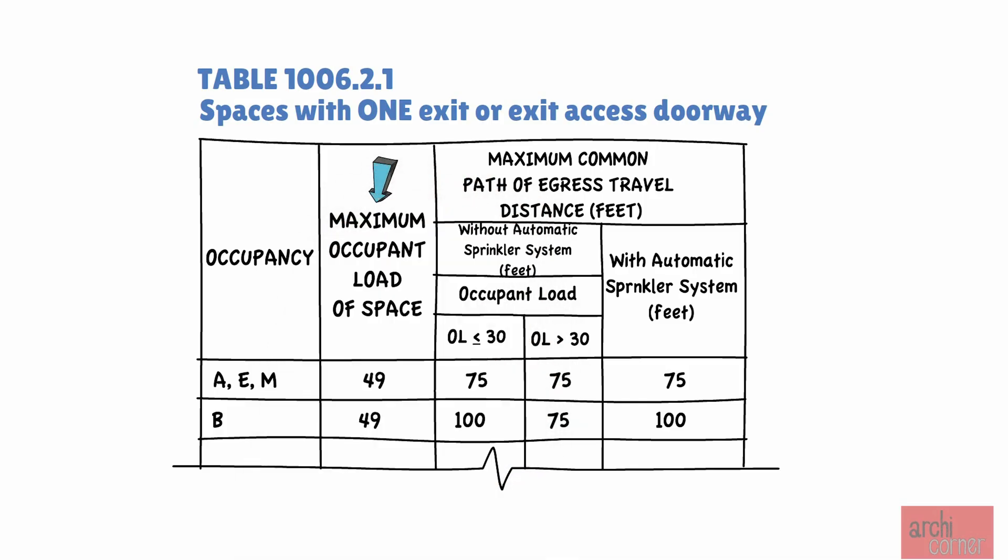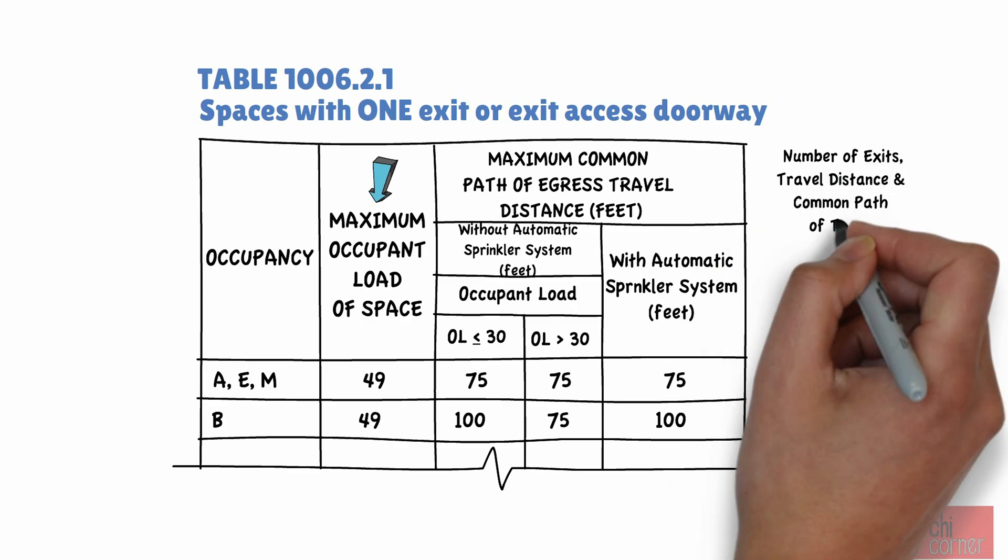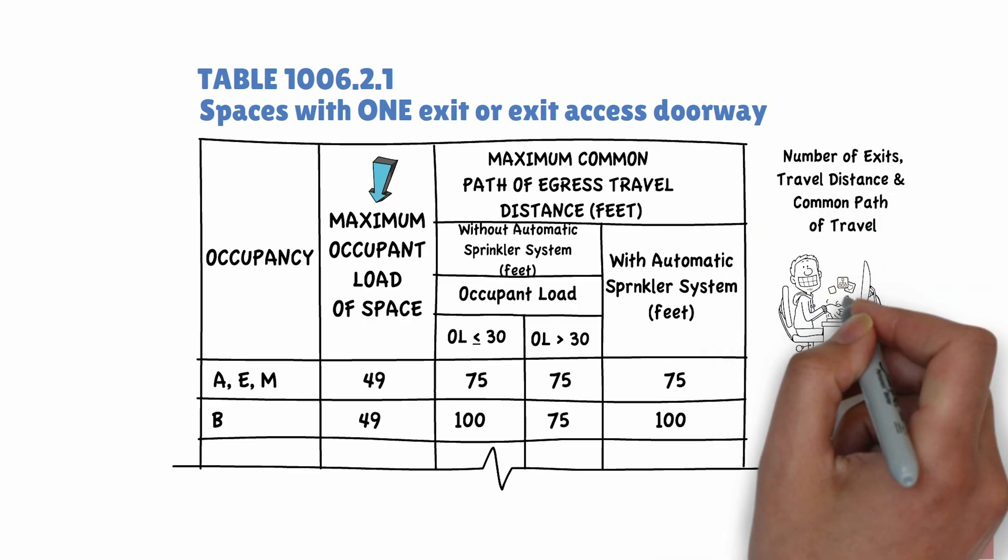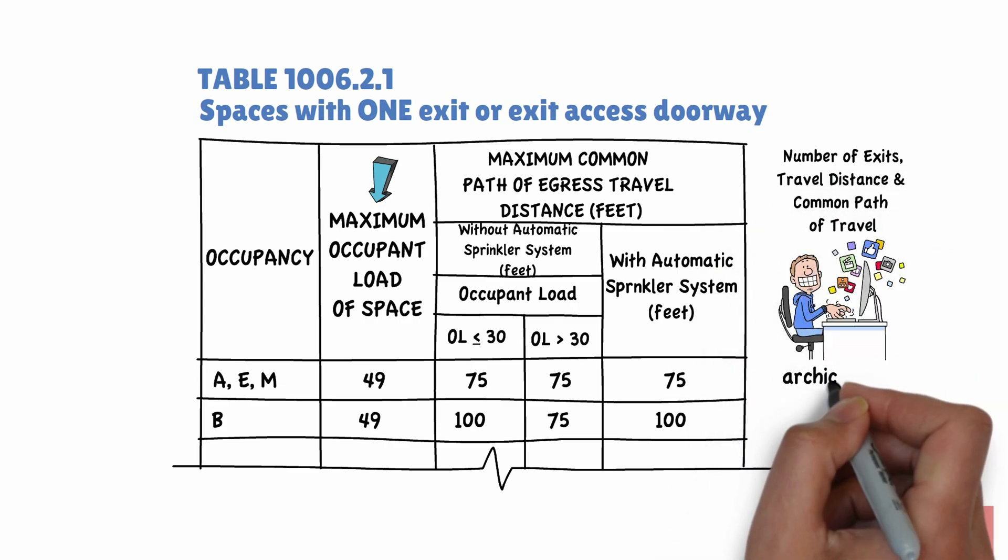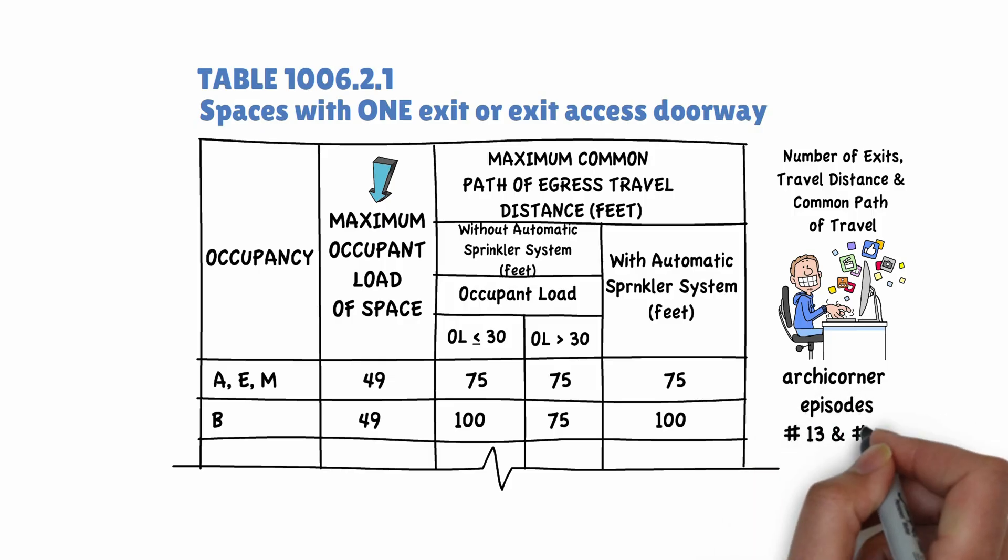One of those maximums is occupant load. If we exceed these occupant loads, we no longer comply with these tables maximums and we need to provide two exits. If you would like to learn more on determining the number of exits required and travel distances allowed, check out ArchiCorner episodes 13 and 29.